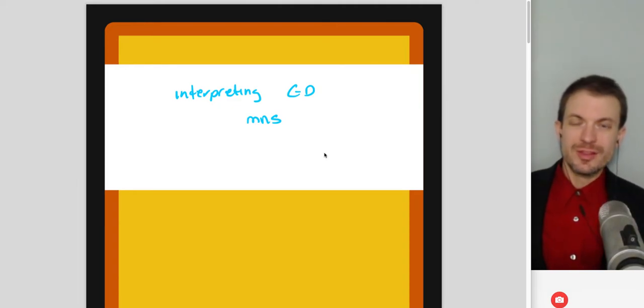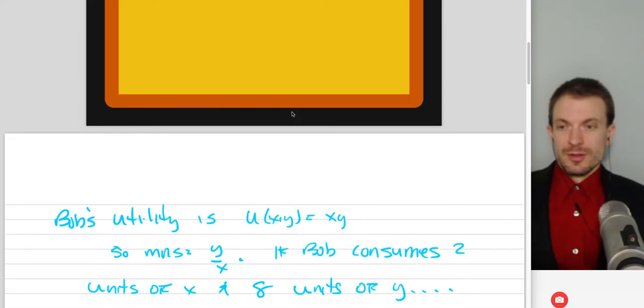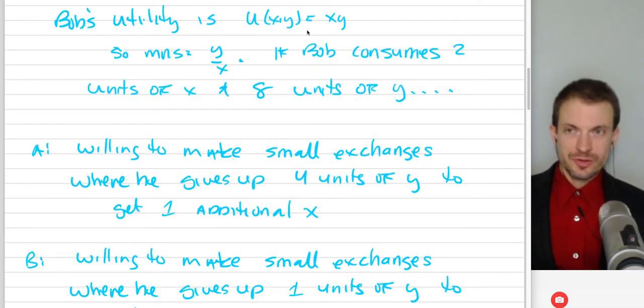Okay, so hello and welcome everyone. In this video, I'm going to talk about interpreting the Cobb-Douglas MRS relative to a quiz question that I had given. So, in the exercise, Bob's utility is going to be just Cobb-Douglas. Utility coming over the amount of X consumed and the amount of Y consumed is just the product of those quantities, X times Y.